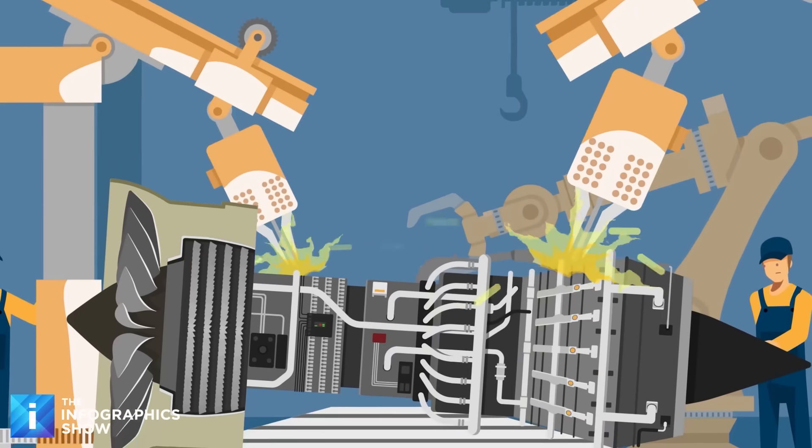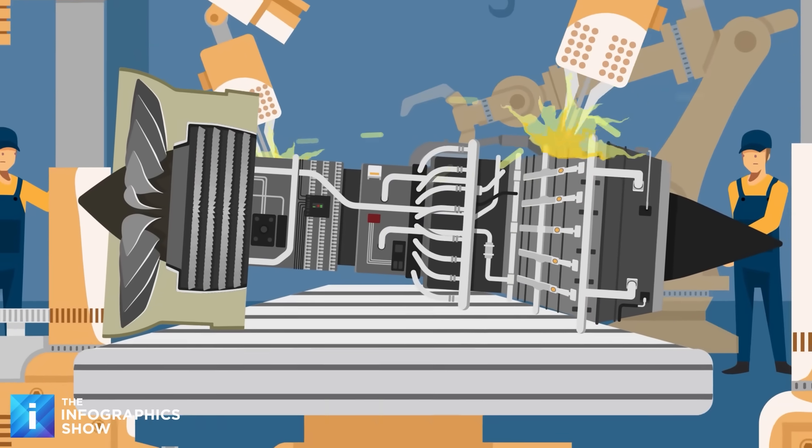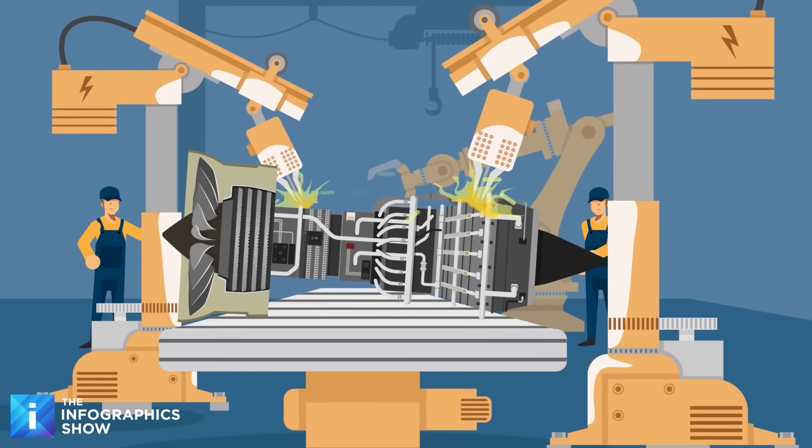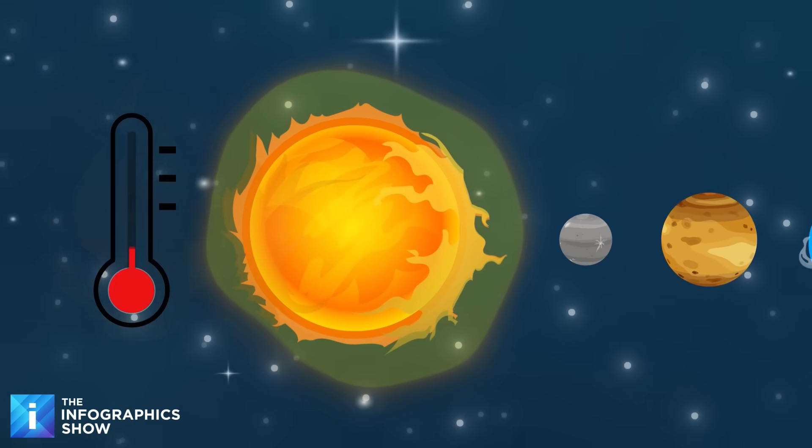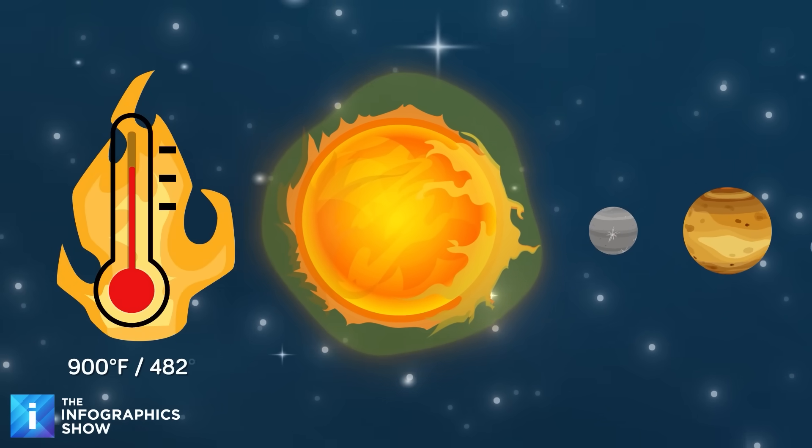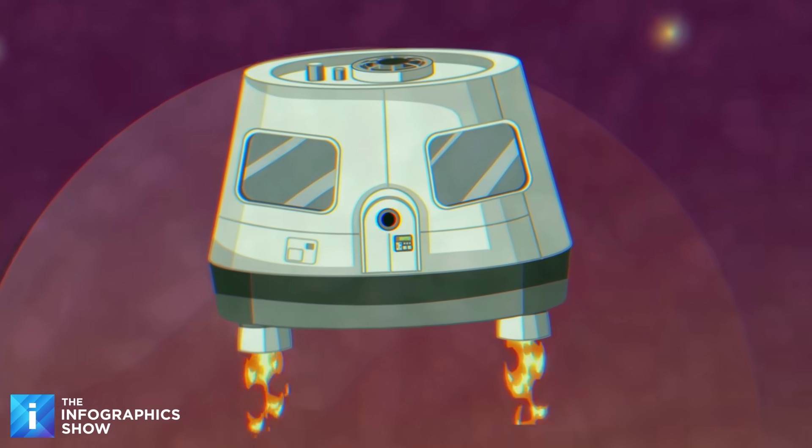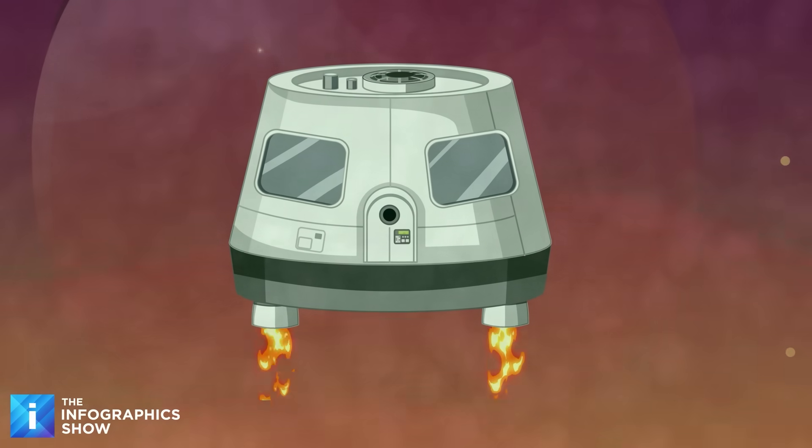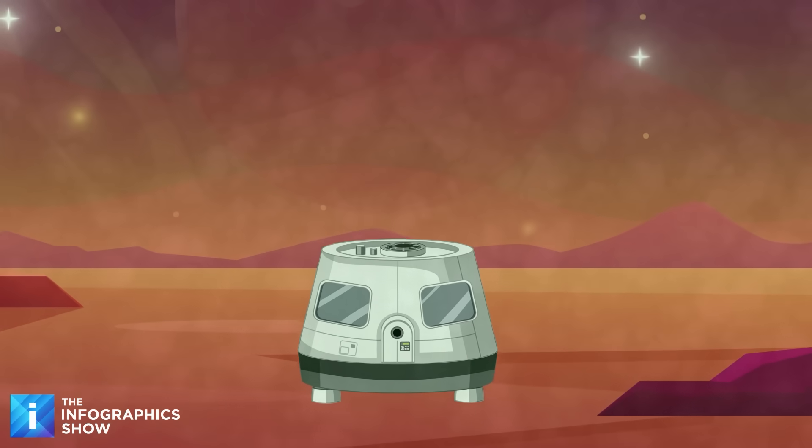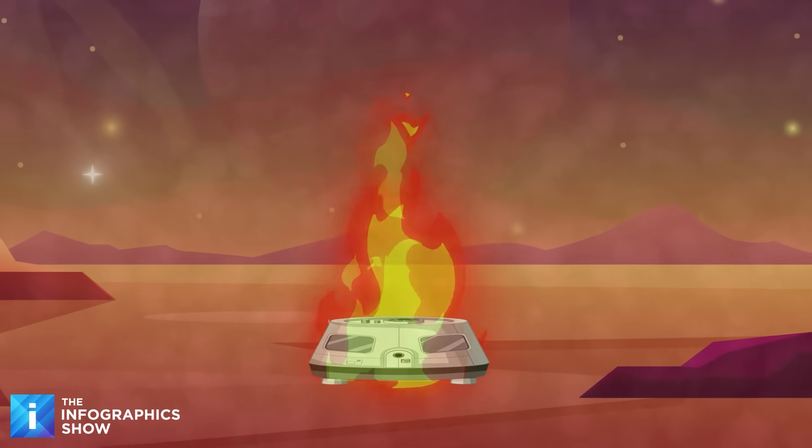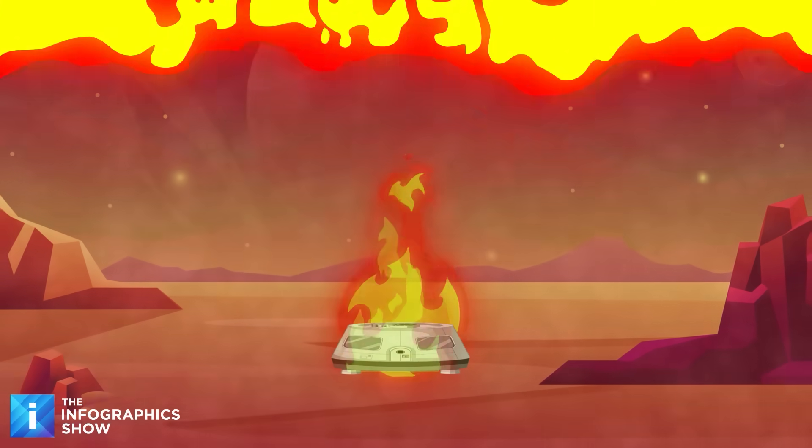But even if your spaceship were made entirely of sulfuric acid-resistant metals like lead and tungsten, you wouldn't last more than a few seconds on the planet's surface. Although farther from the sun, it's even hotter than Mercury, at around 900 degrees Fahrenheit. That's three and a half times hotter than NASA's best spacesuit can withstand. You would be burnt to ashes instantly. Or rather, what's left of you would, because the pressure would get to you before the extreme heat even had a chance.